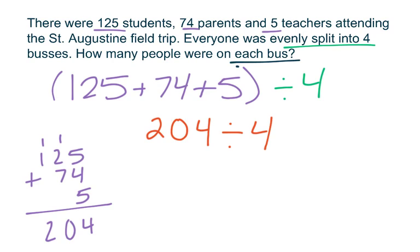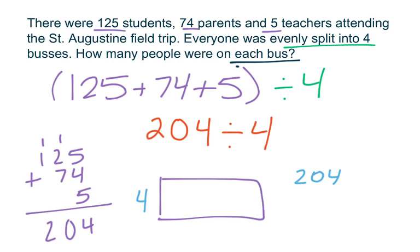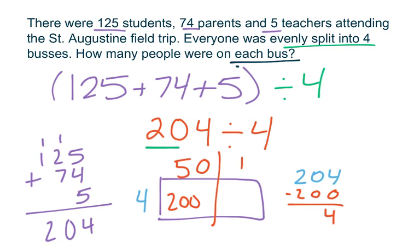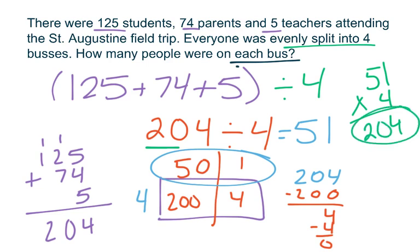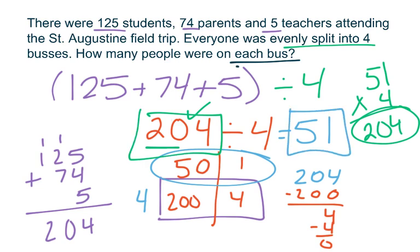I could divide a number of different ways. I'm going to use the area model to divide. I have my 204 off to the side, and I can look at the 20 in 204 and think how many times does 4 go into 20. Well, 4 times 5 gives me 20, so 4 times 50 is going to give me 200. I subtract and I'm left with 4, and then 4 times 1 gives me 4. I subtract and I'm left with 0. So my quotient is 51. I'm going to check my work with multiplication before I put that down as my answer. 4 times 1 is 4, 4 times 5 is 20, giving me 204 — that equals my total of 204. So there are going to be 51 people on each bus.